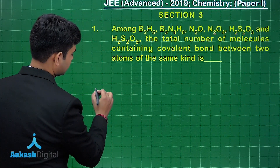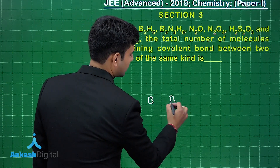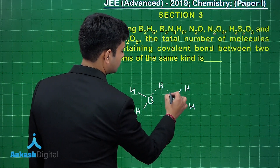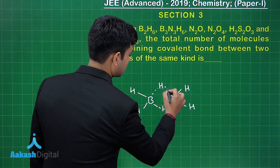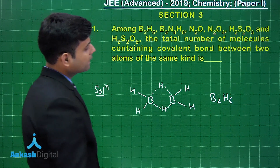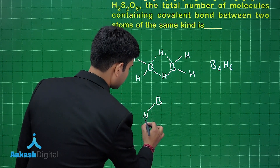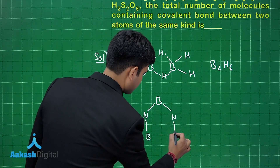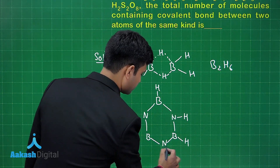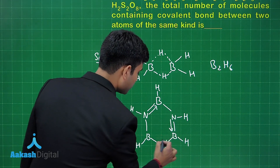First of all we have B2H6. In B2H6 we have banana bonds — these are the banana bonds. This is B2H6. Second is B3N3H6, and this is the structure of B3N3H6.